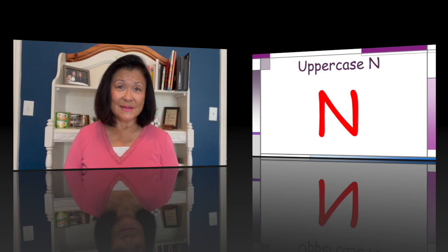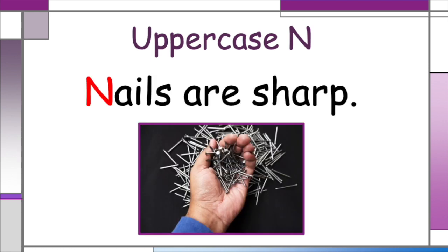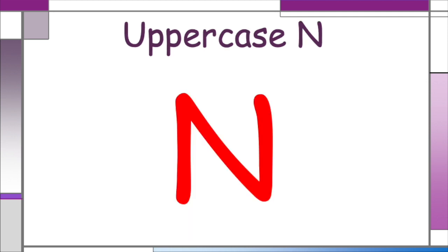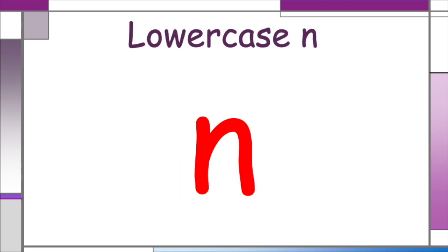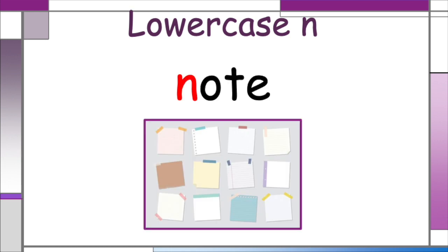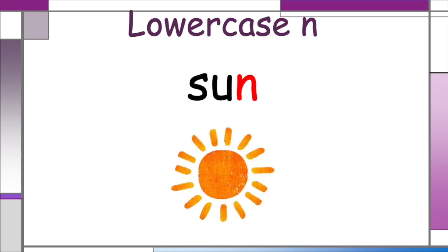Now did you know there's a big N and a little N? The big N is called uppercase N. It usually starts important words like the first word in this sentence: Nails are sharp. Uppercase N is also used in the first letter of names such as Noah, Nick, and Natalie. The little N is called lowercase N. It usually starts ordinary words like note, or shows up in the middle as in bench, or comes at the end of words like sun.